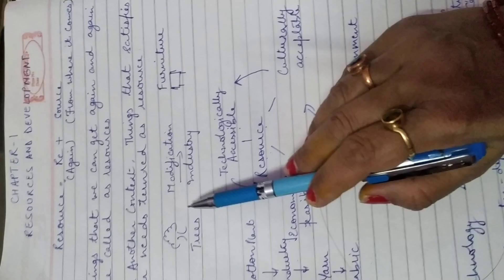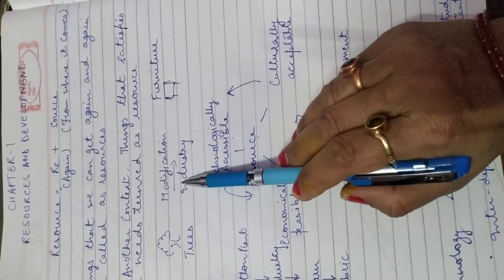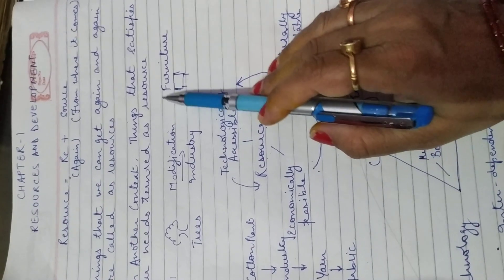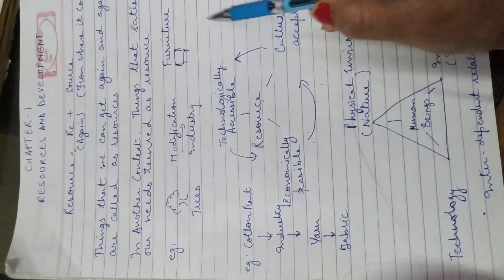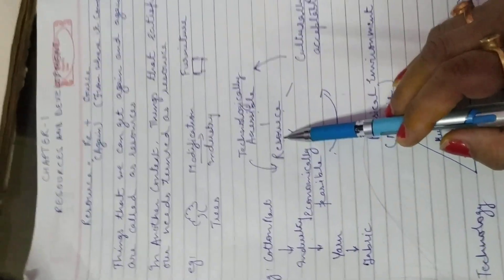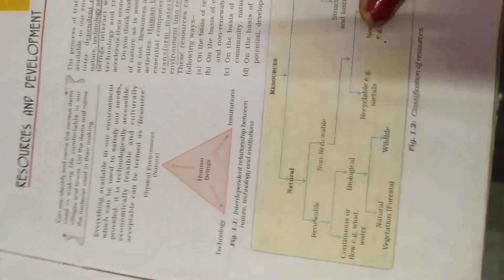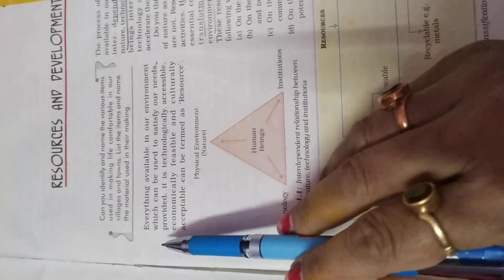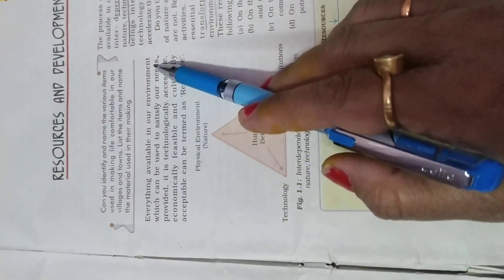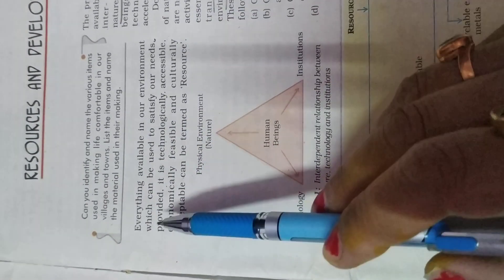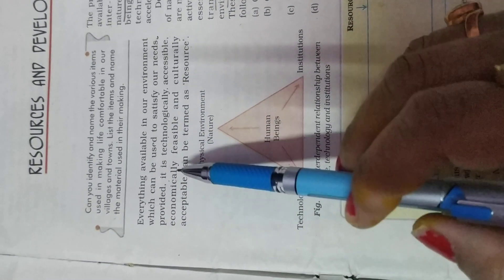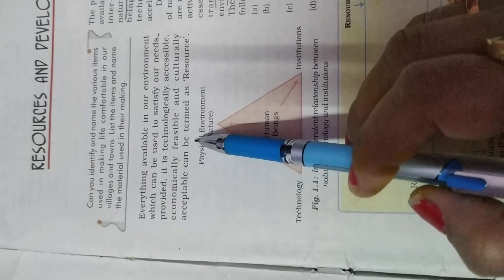We get timber from the trees, we modify them, take them to the industry and change them into furniture. The furniture itself is a resource for us because furniture satisfies our needs. Then coming to your NCERT book: everything available in our environment which can be used to satisfy our needs, provided it is technologically accessible, economically feasible and culturally acceptable, can be termed as a resource. This definition uses three key terms.